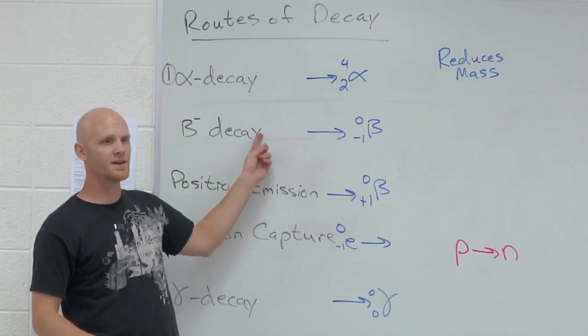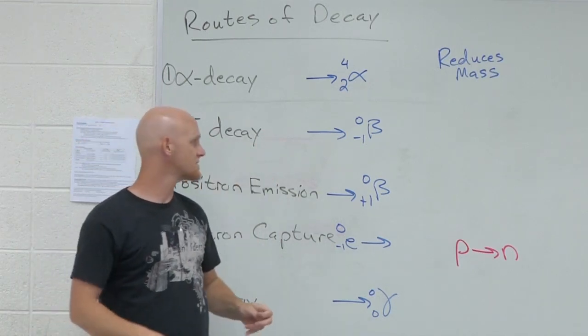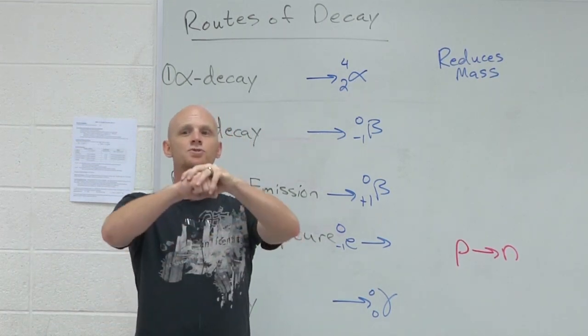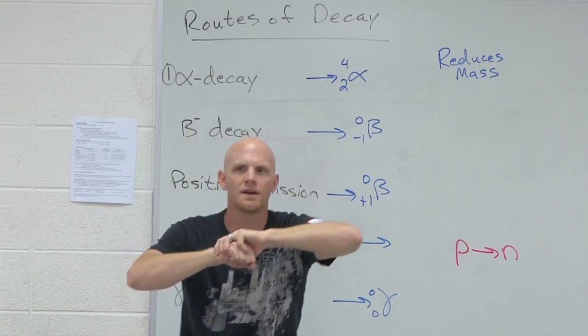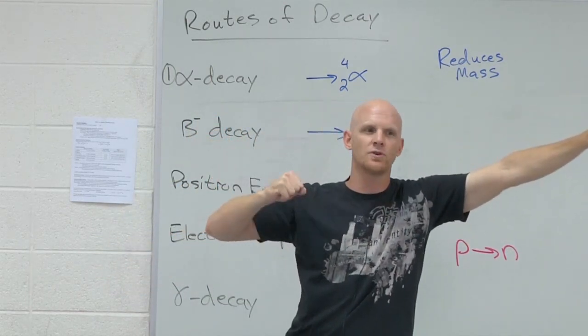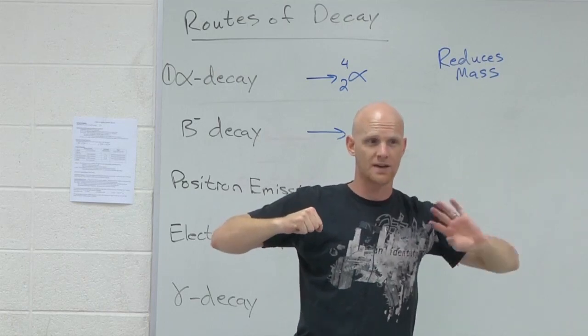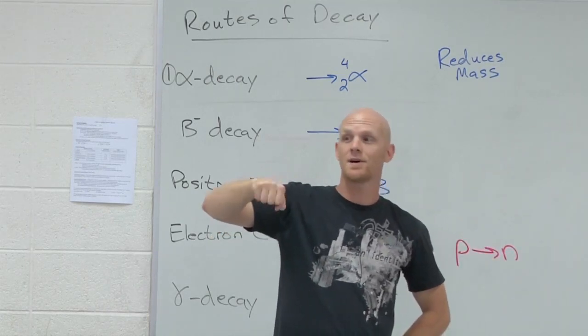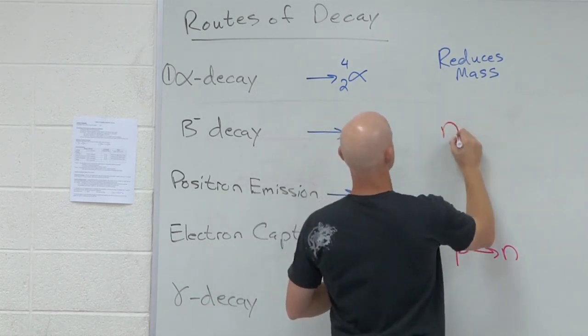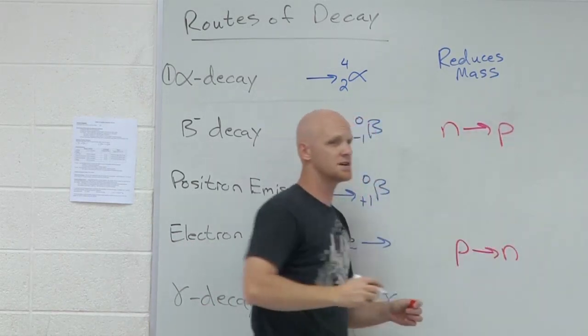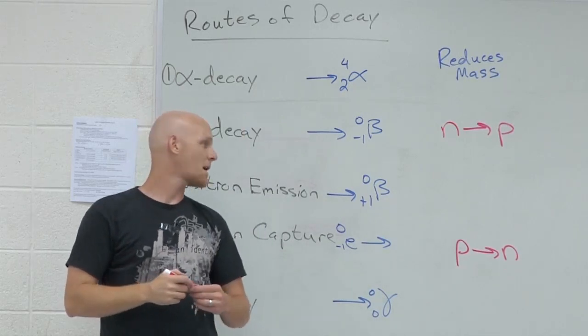Let's look at beta decay, electron emission on the other side of the story. In this case, you've got a neutron in the nucleus and that neutron ejects an electron out of the nucleus. Gone. That electron is emitted. What's left in the nucleus then? A proton is left behind. In this case, it converts a neutron into a proton. The exact opposite.